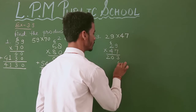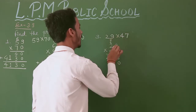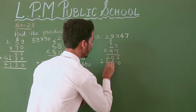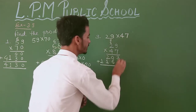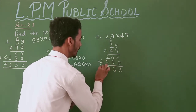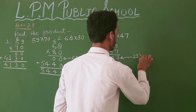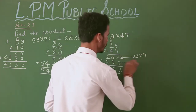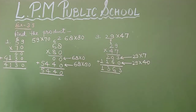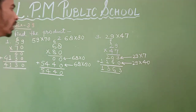Now multiply the 10s: 4 nines are 36, write 6, 3 carry. And 4 twos are 8, plus 3 gives 11. Now add the products: 3 plus 0 = 3, 0 plus 6 = 6, 2 plus 1 = 3, and 1. So 29 × 7 gives 203, and 29 × 40 gives 1,160.